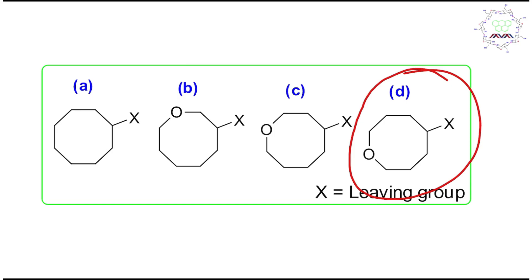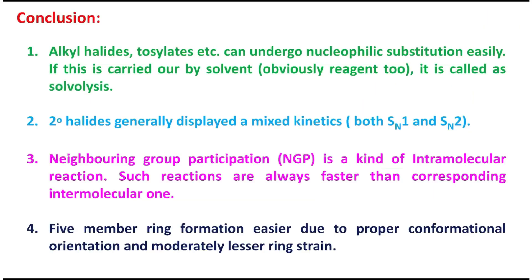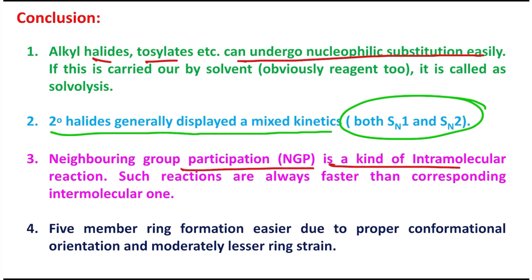Now in conclusion, what you have learned: alkyl halides, tosylates, etc. can undergo nucleophilic substitution easily, and here solvolysis is possible when the solvent is acting as reagent too. Now secondary halides generally displayed mixed kinetics, both SN1 and SN2 explained. Now neighboring group participation, NGP, is a kind of intramolecular reaction. Such reactions are always faster than corresponding intermolecular counterpart.